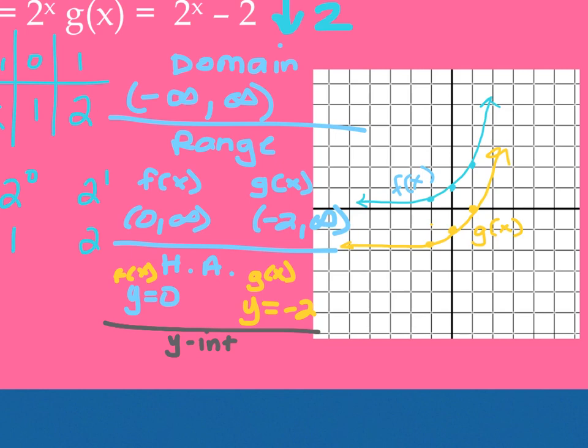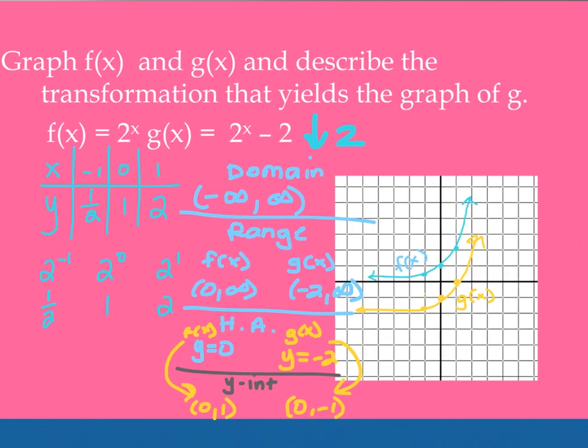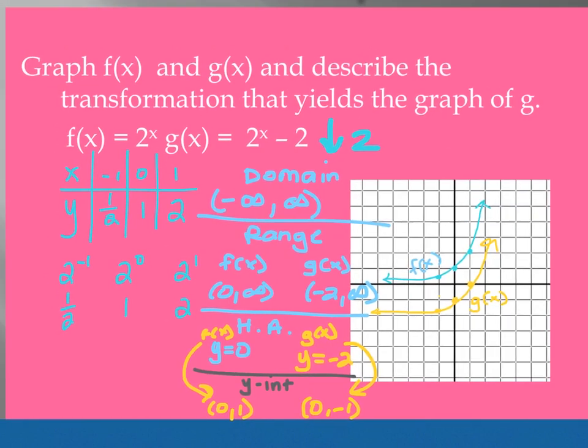And then the y-intercept. So the y-intercept for f(x) is 0, 1. And for g(x)? 0, negative one. Good. Shifted down two places. Questions on any of that?